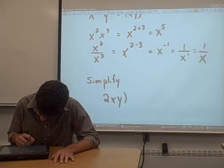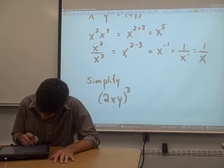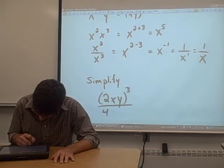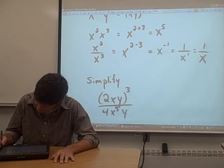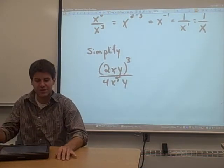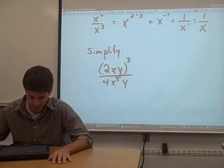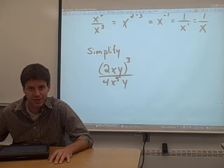2xy cubed over 4x to the 5th y. There's an expression for you. It's got lots of x's and y's in it, a couple of constants as well, and we want to simplify it as much as we can.